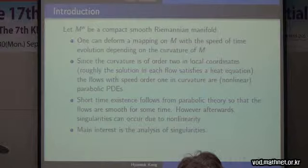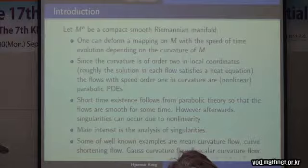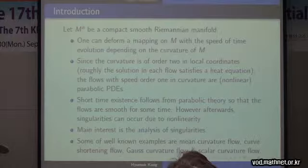Well-known examples in this subject are: first, mean curvature flow and the curve shortening flow, which is a one-dimensional version of mean curvature flow; the Gauss curvature flow; and also the not-so-well-known or well-studied scalar curvature flow, to which I've made a bit of a contribution.